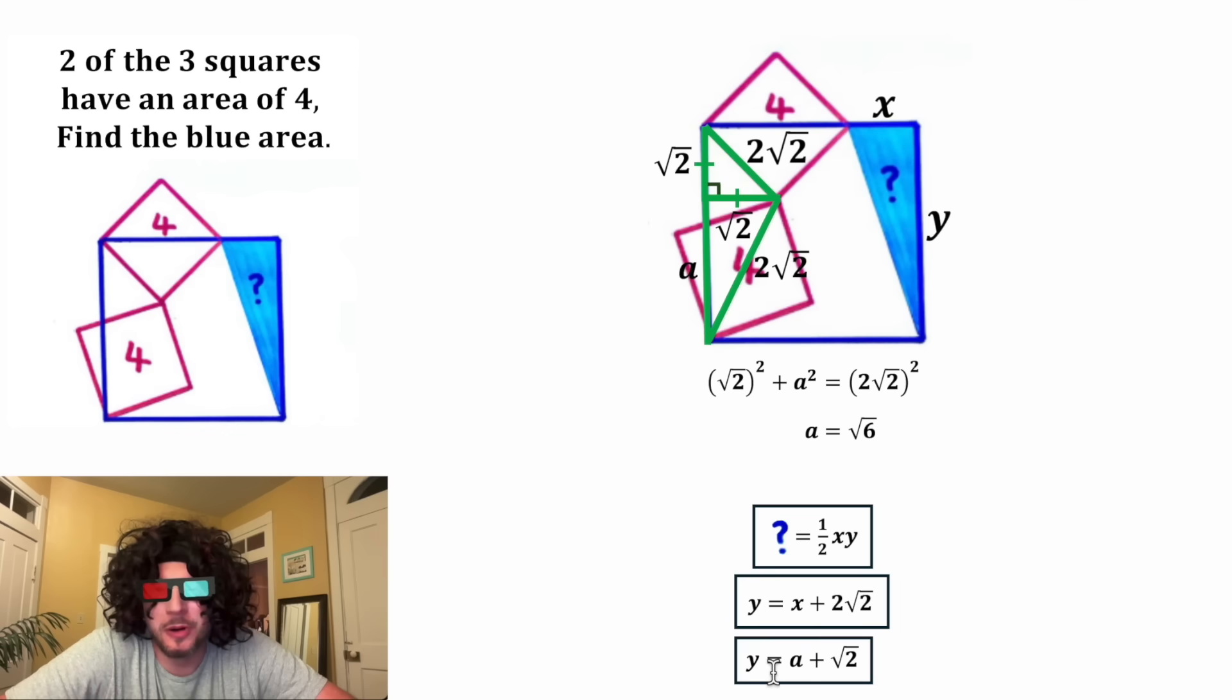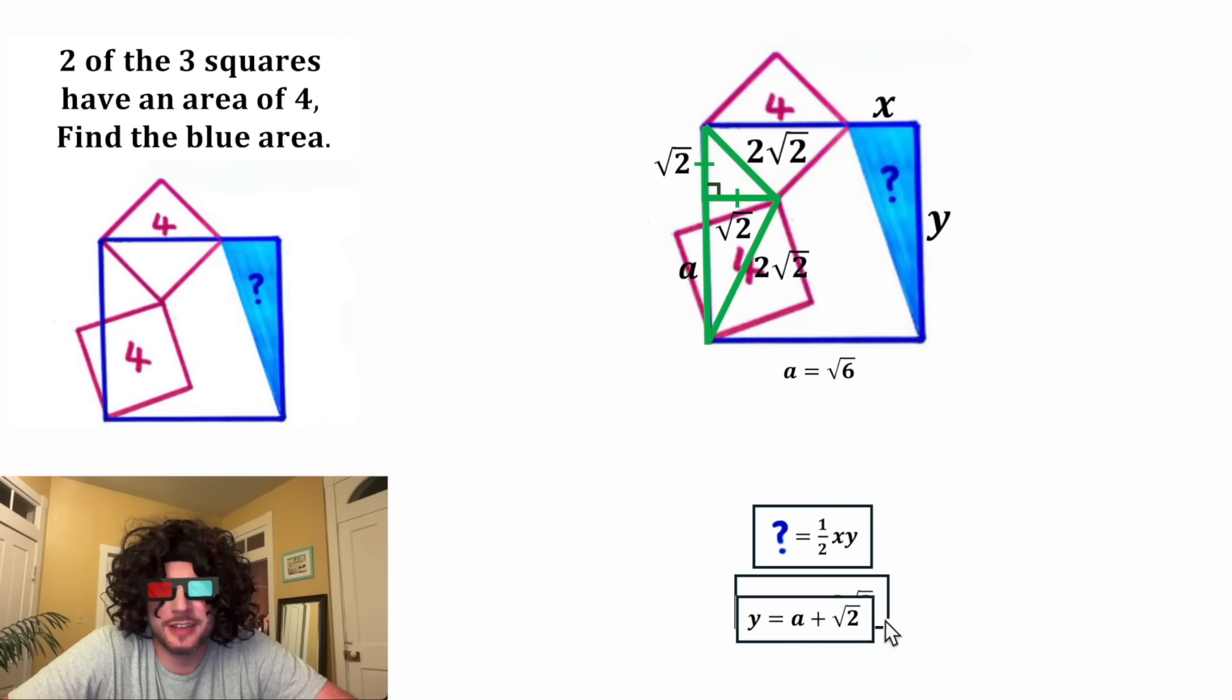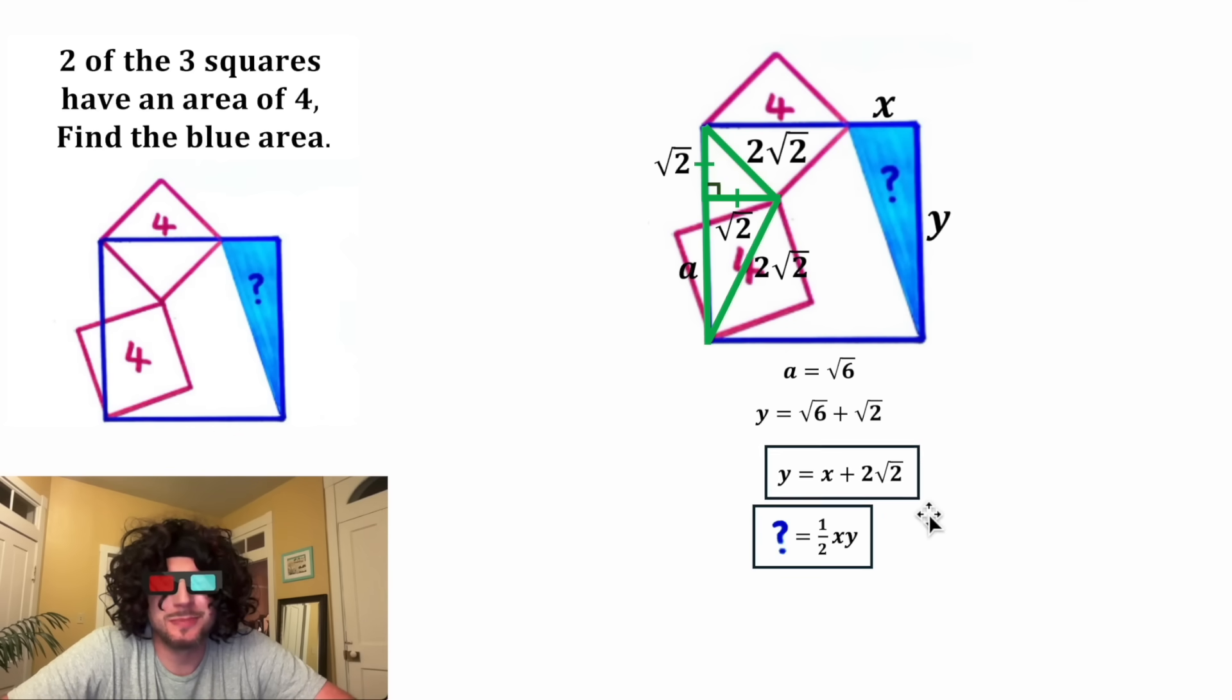We can plug it into here and get Y. And then we can get X. And then we can find our area. So let's do that. In the place of this a, we'll plug in root six. And now we have Y is equal to the square root of six plus root two. And now we're ready for this box.